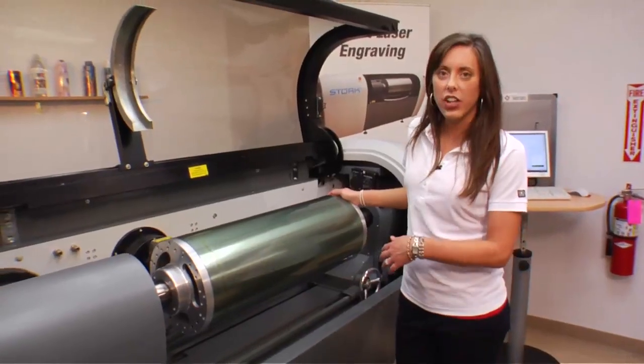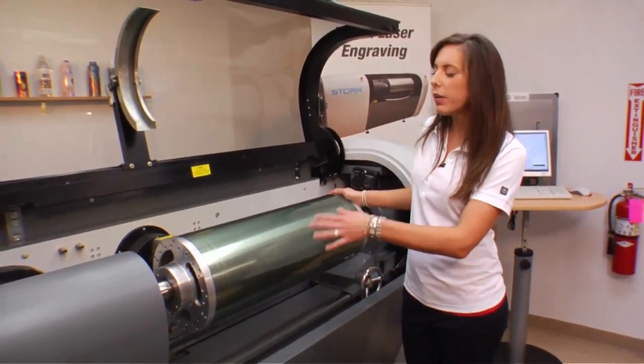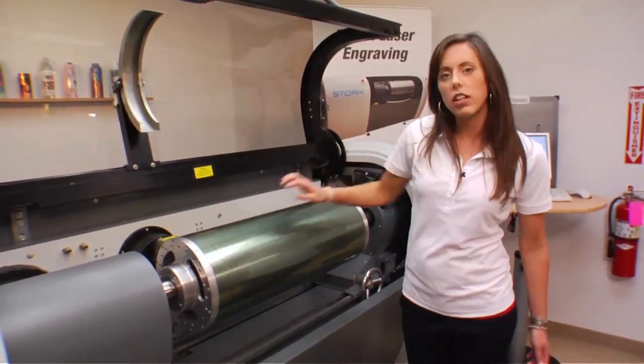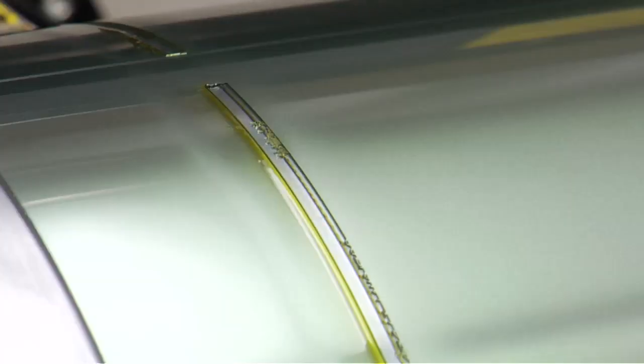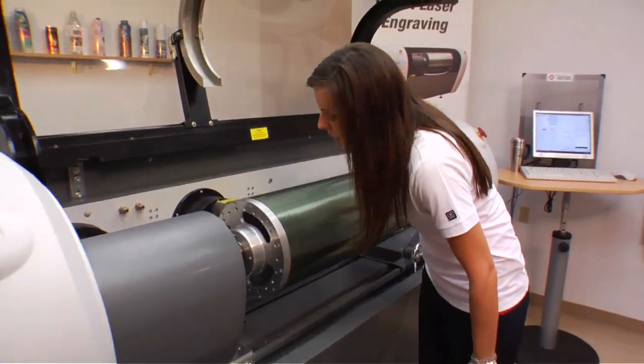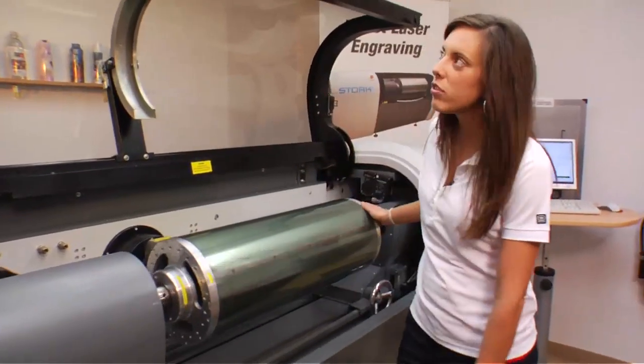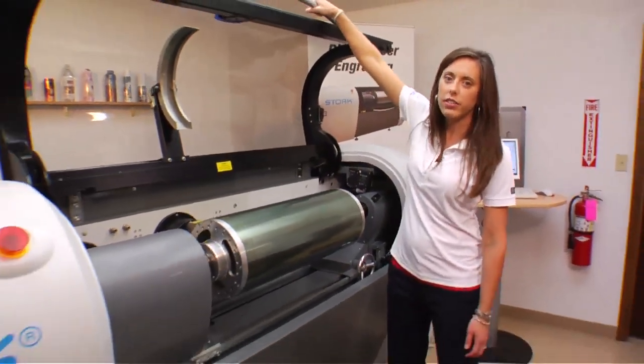The direct engraving process completely ablates away all of the material so that we have a relief surface instead of going through a chemical washout and processing as other materials do. Okay, so the engraving looks good. I'm happy with the placement of the image. I'm going to close the cover and start the job again.